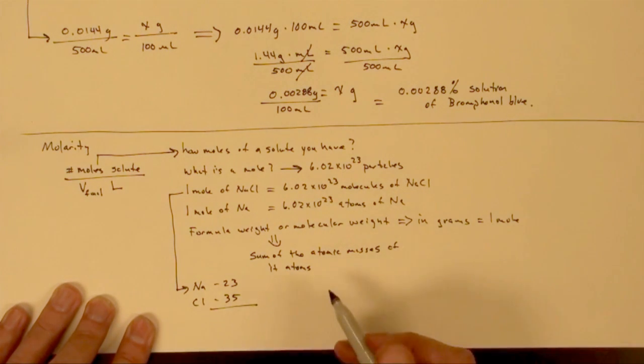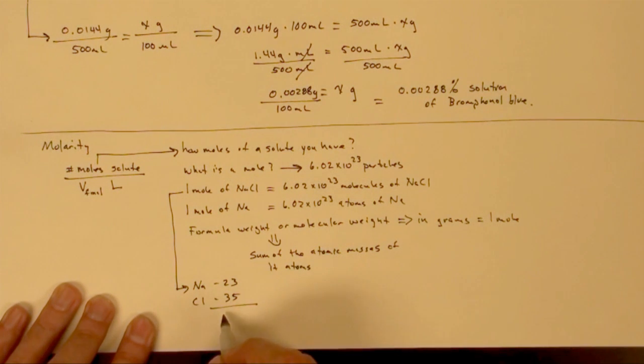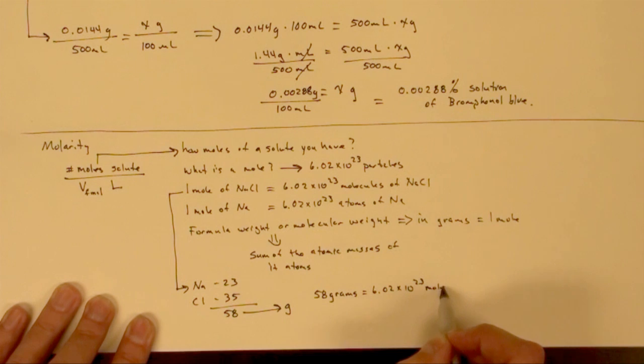So the atomic mass or the molecular weight of sodium chloride is 58, so 58 atomic mass units. If we then convert this to grams, then 58 grams equals 6.02 times 10 to the 23rd molecules of sodium chloride.